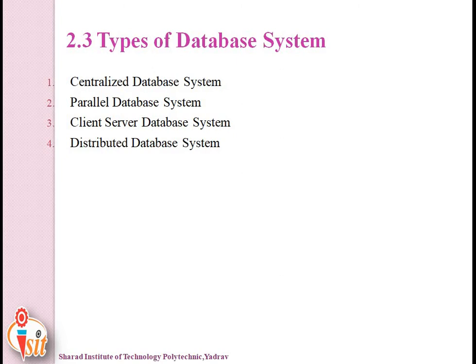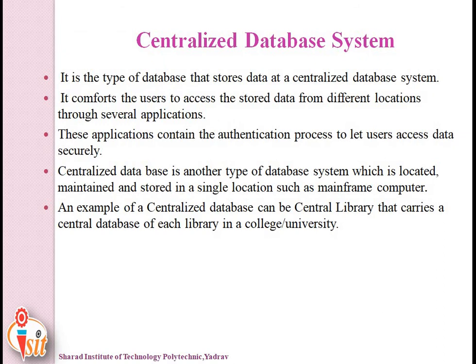The last topic of this unit is the types of database systems: centralized, parallel, client-server, and distributed. A centralized database system stores data at one central location and allows users to access stored data from different locations through several applications. This system is located, maintained, and stored in a single location such as a mainframe computer. An example is a central library that carries the central database for each library in a college or university.